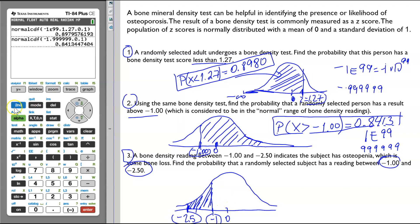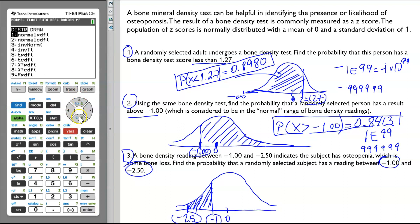In the graphing calculator, go to 2nd VARS to get to distribution. And, we need normalcdf. For the lower limit, we will enter negative 2.5. For the upper limit, we are going to enter negative 1. Enter.